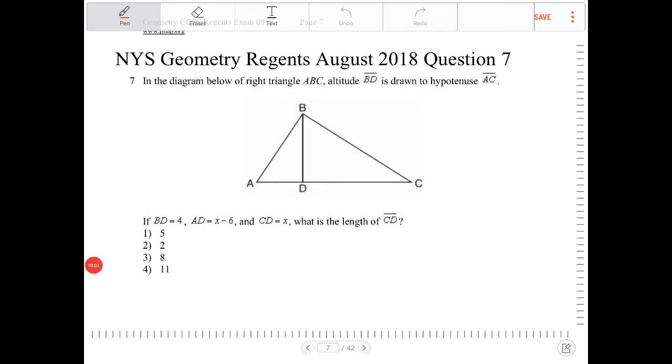In the diagram below of right triangle ABC, altitude BD is drawn to hypotenuse AC. If BD is equal to 4, AD is X minus 6, CD is X, what is the length of CD?